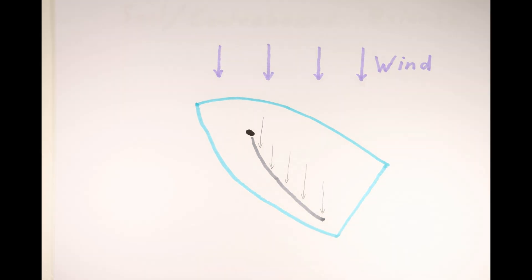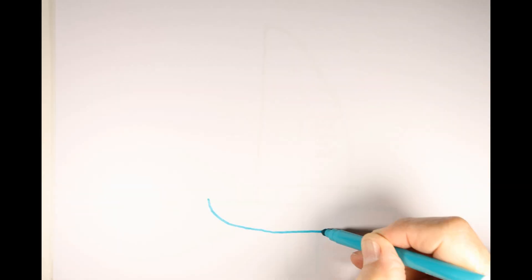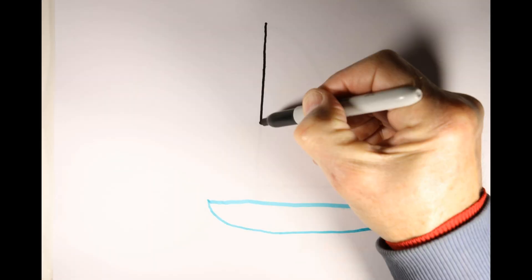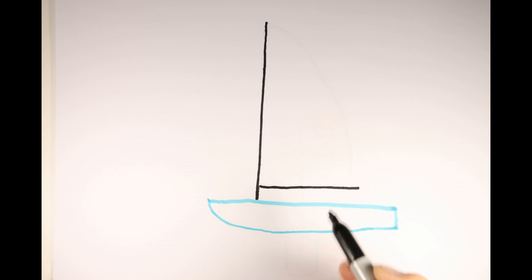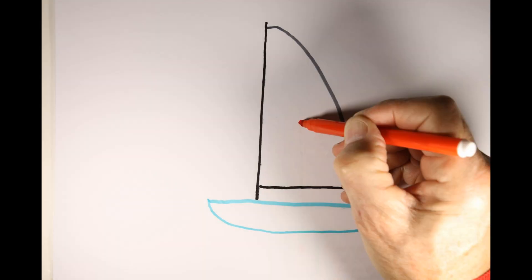These individual wind forces can be averaged together and be shown as one force, shown here as the green arrow. Looking at the boat from the port side, we can see that the average of the wind forces on the sail can be represented as the red dot.